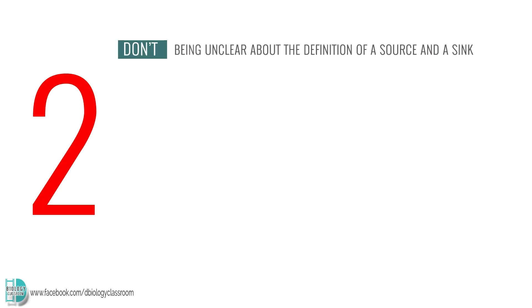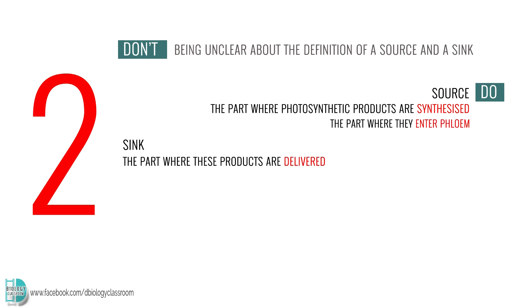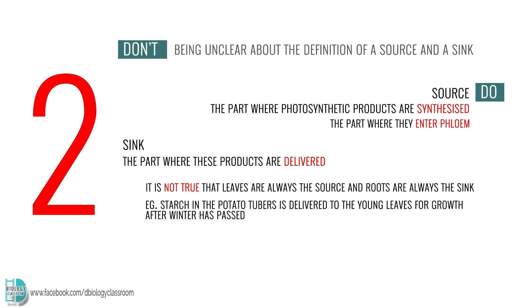Number 2: being unclear about the definition of a source and a sink. A source is the part where photosynthetic products are synthesized or where they enter flow. A sink is the part where these products are delivered. Hence, it is not true that leaves are always the source and roots are always the sink. For example, starch in the potato tubers is delivered to the young leaves for growth after winter has passed. In this case, the root is the source and the young leaves are the sinks.